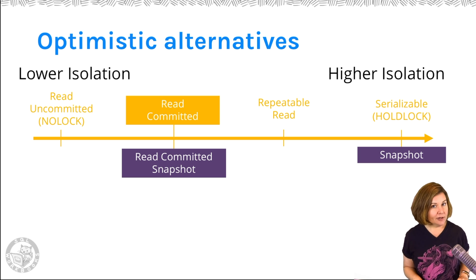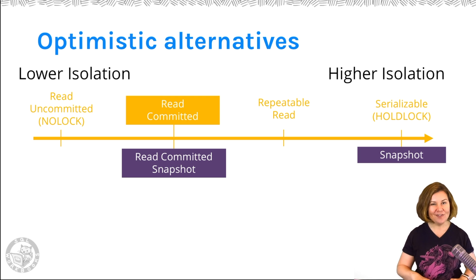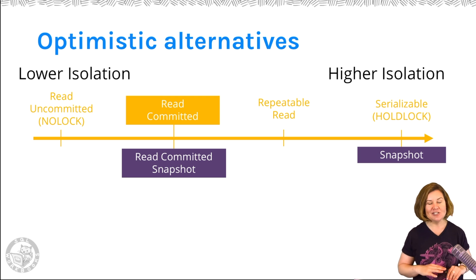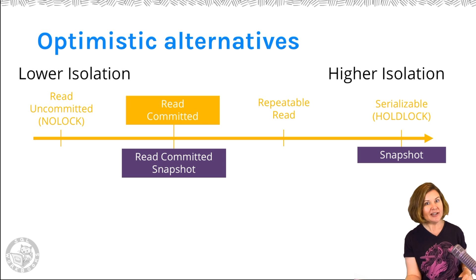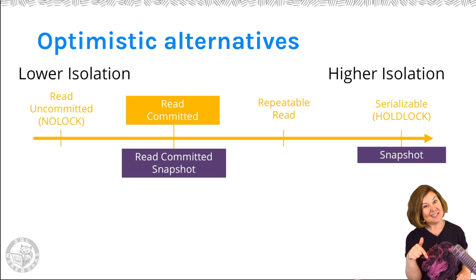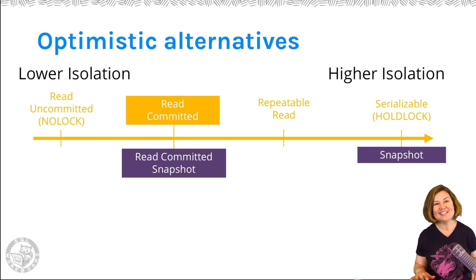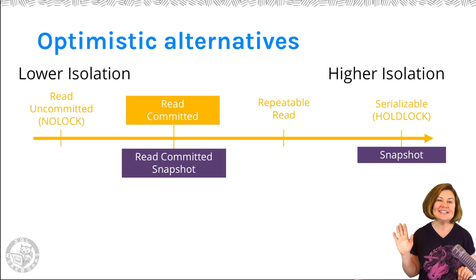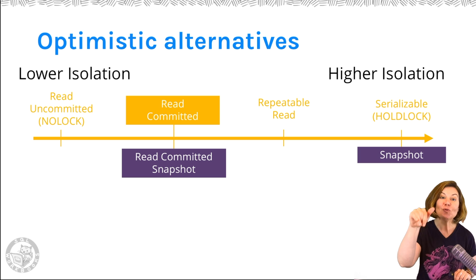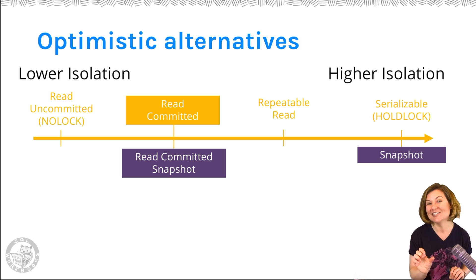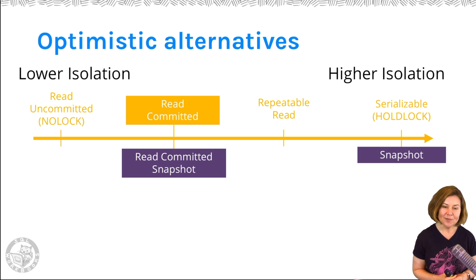Read committed snapshot still honors things like NOLOCK hints. If your code is riddled with NOLOCK hints already due to blocking problems and you change the default isolation level for your database, those hints in your code are still going to be honored. So it changes the default isolation level, but it does not override all the isolation level hints you necessarily have in your code.